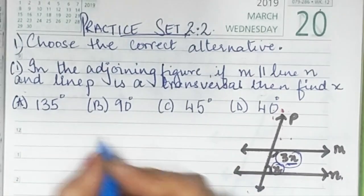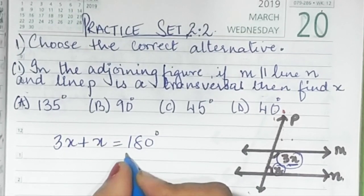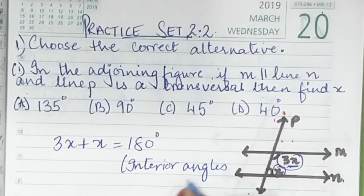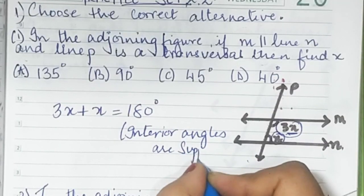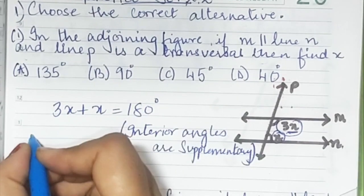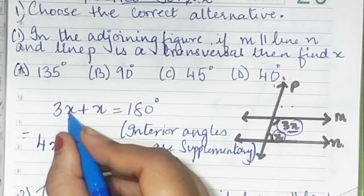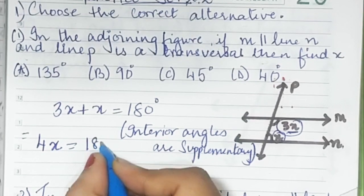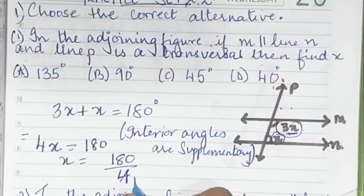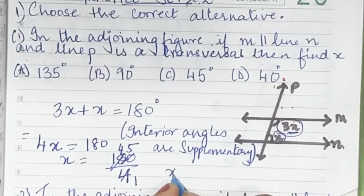Interior angles are supplementary. So 3x plus x is 180 degrees. Therefore 4x is equal to 180. So x is equal to 180 divided by 4, which gives us the value of x is 45 degrees.